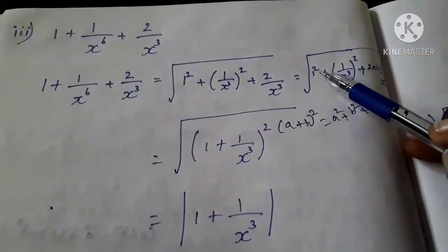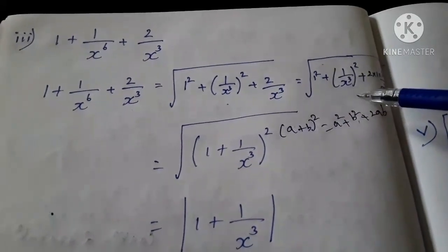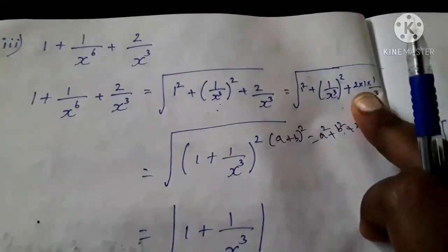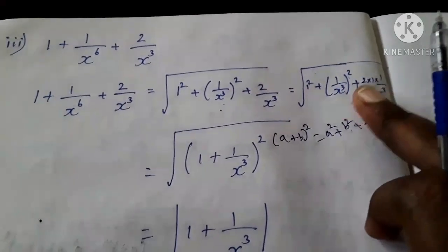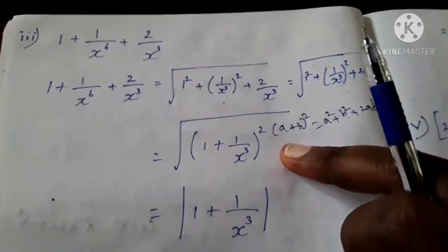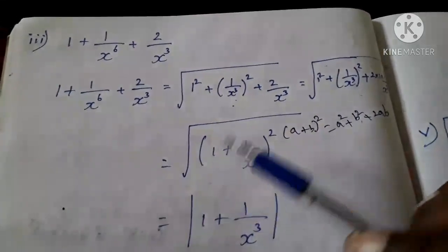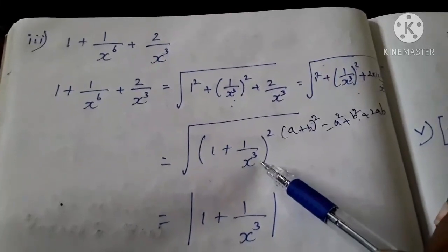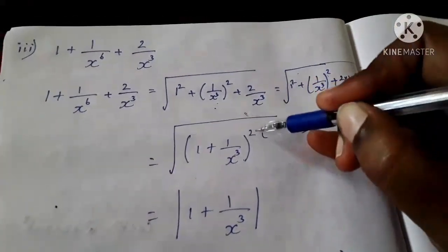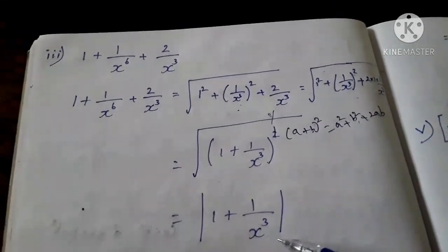So (a + b)² = a² + b² + 2ab. Here a² = 1², b² = (1/x³)², and 2ab = 2 × 1 × 1/x³. So we prove the right side, then write the left side: a is 1, b is 1/x³. So the expression equals (1 + 1/x³)². Square and square root cancel, so our answer is 1 + 1/x³.